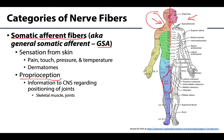Somatic afferent fibers don't just innervate the skin but also skeletal muscle, tendons, and joints. Proprioception is talked about less in terms of sensory innervation but is very important — it provides sensory information regarding the positioning of a joint or stretch of a skeletal muscle without visual input. For example, moving your fingers behind your back: you know that's happening without seeing it — that's proprioception.